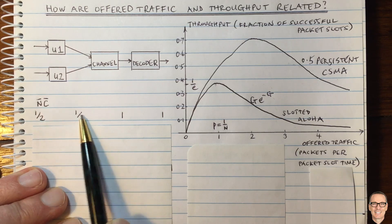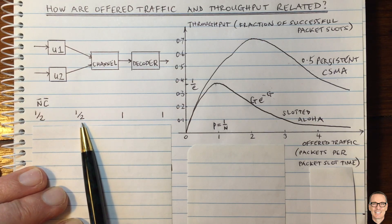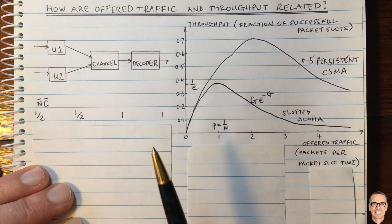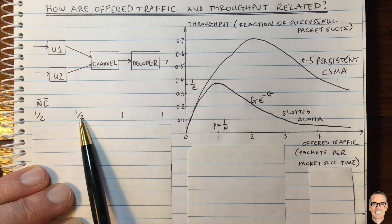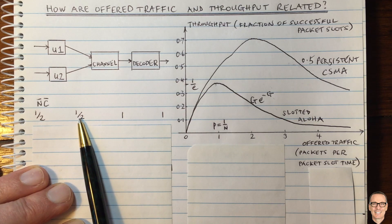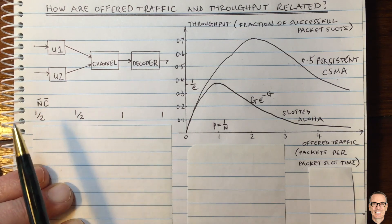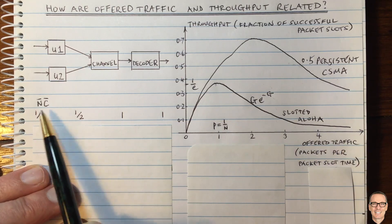Interestingly, we need to start thinking about fractions for our rates — it's not like megabits per second. We're now talking about packets per packet slot time, so it was always going to be fractions. Let's think about another scenario to help us understand offered traffic, specifically where there is noise.